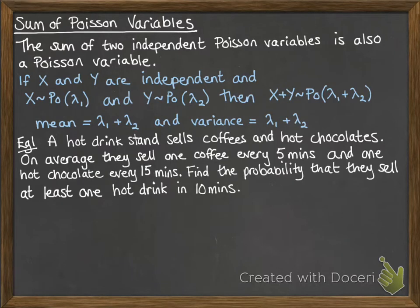Let's have a look at an example. A hot drink stand sells coffees and hot chocolates. On average they sell one coffee every 5 minutes and one hot chocolate every 15 minutes. We want to find the probability that they sell at least one hot drink in 10 minutes. We need to combine the coffees and the hot chocolates together and change the time interval to 10 minutes.